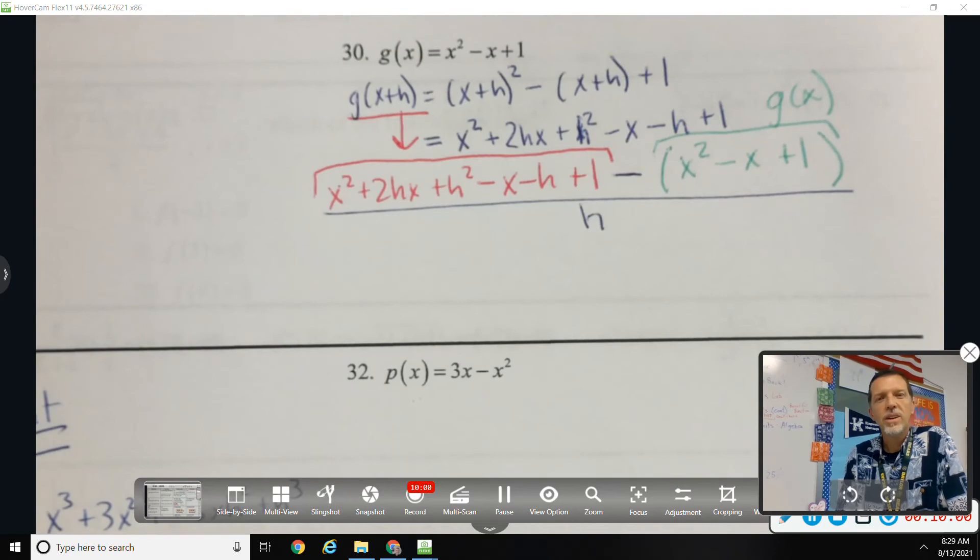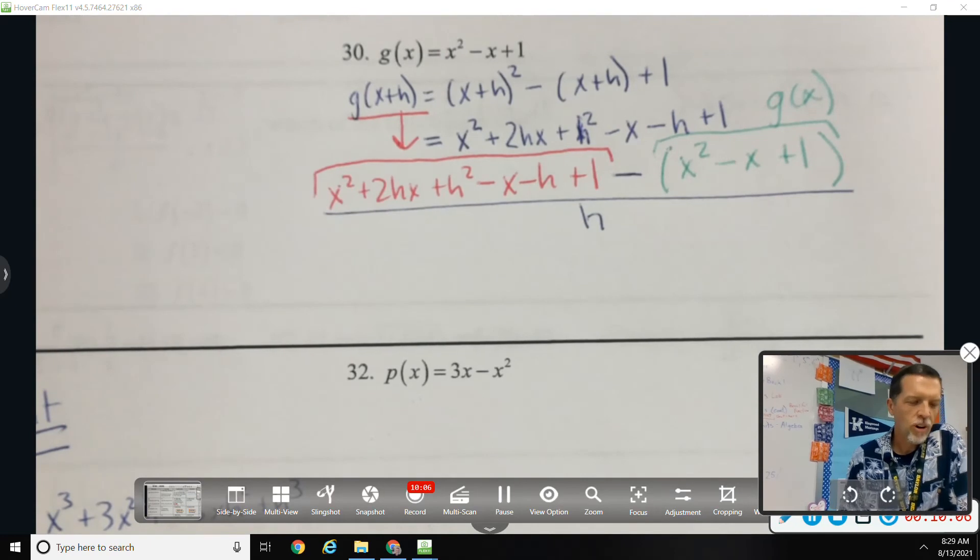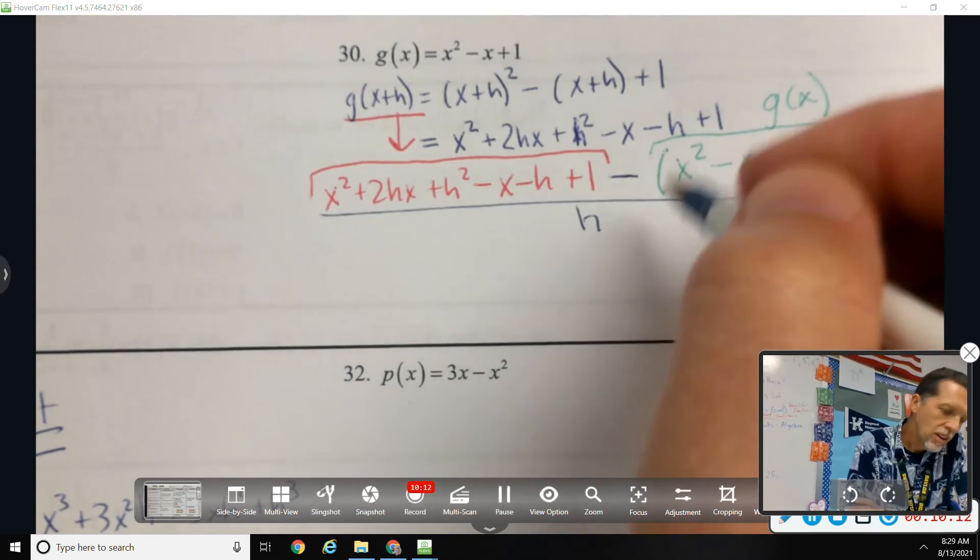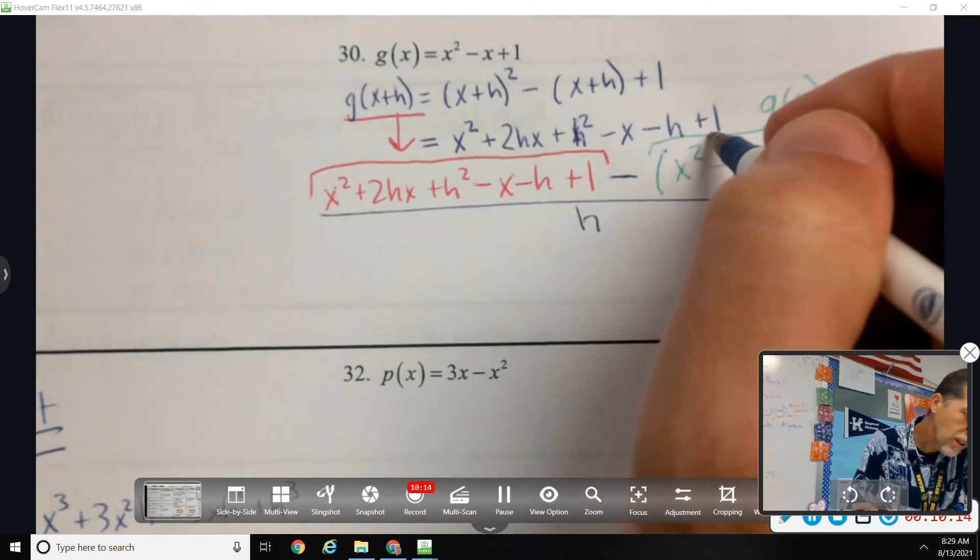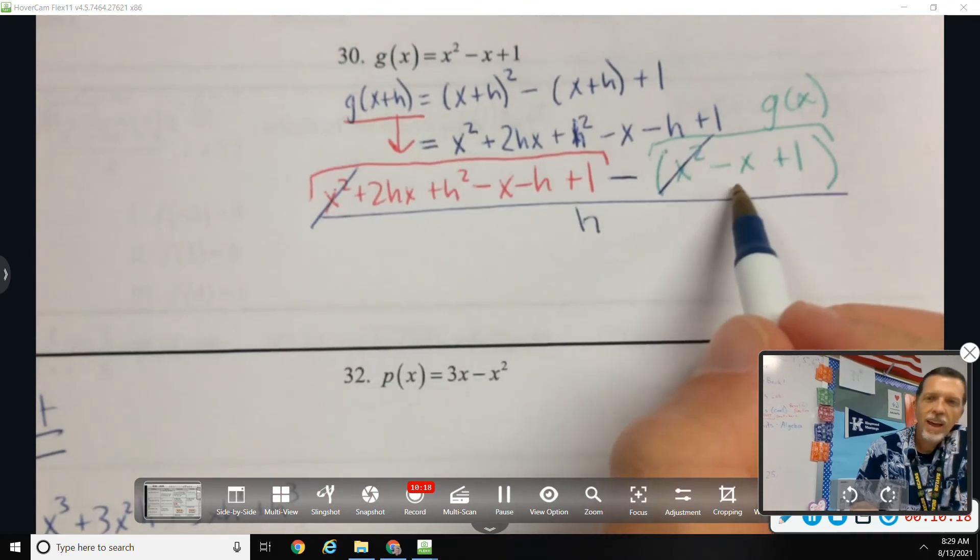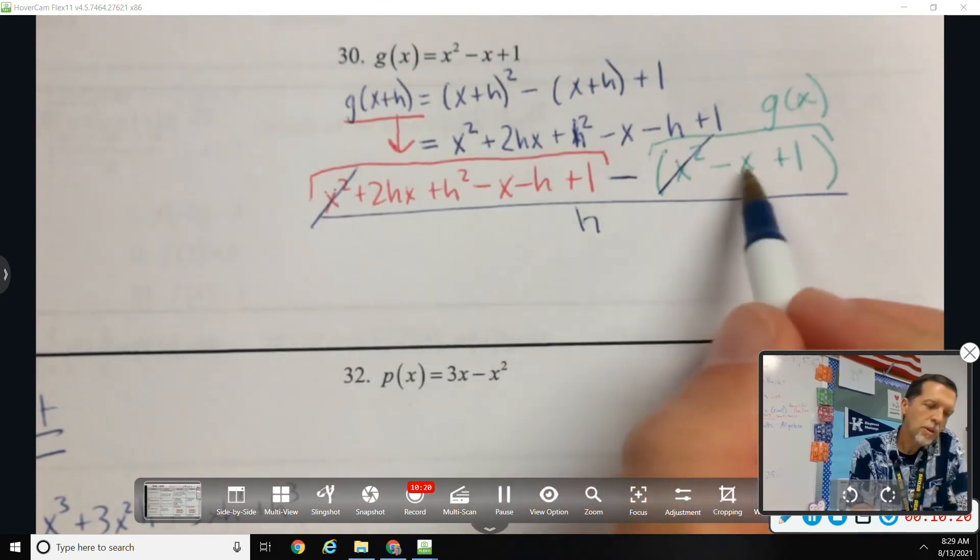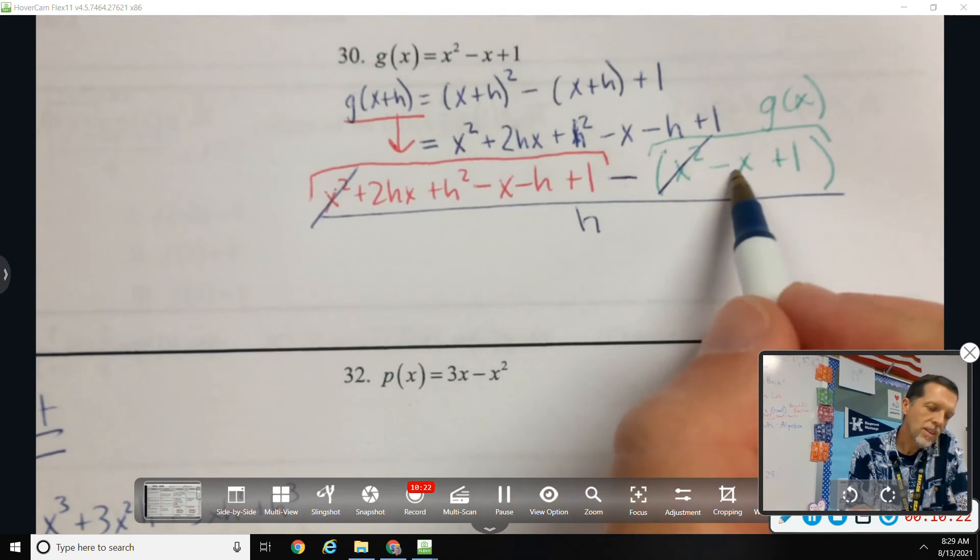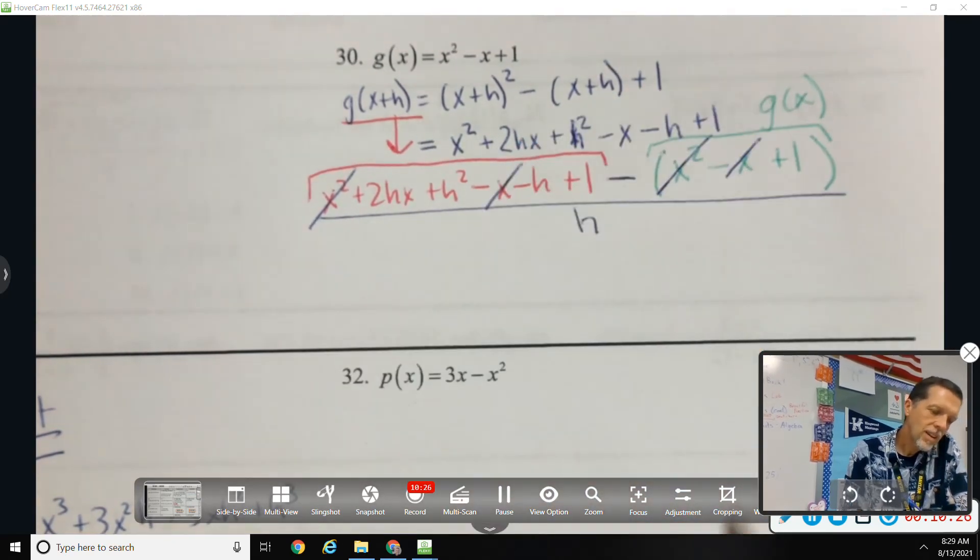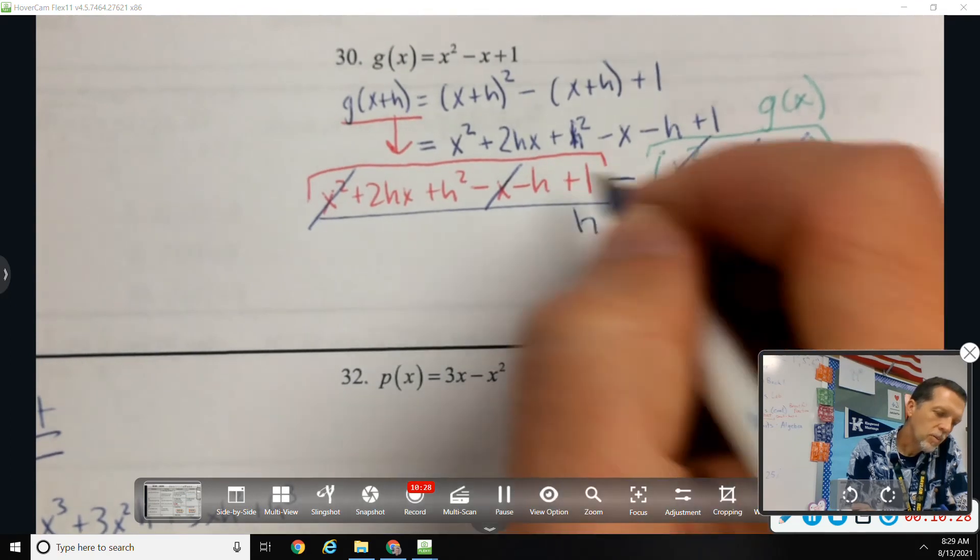And now I look for things to cancel. You remember the shortcut, not the shortcut but maybe the check or hint, is that everything in g of x is supposed to cancel. So minus x squared and plus x squared, that looks like a minus x but remember it's really a plus x because of that minus sign, so plus x and minus x, and minus one and plus one.